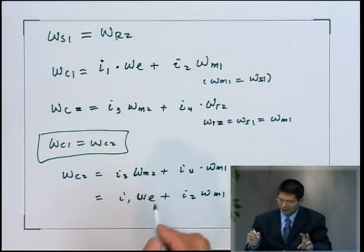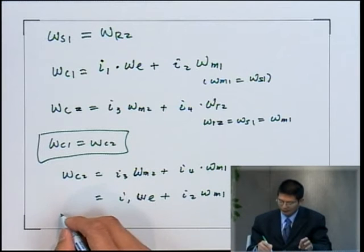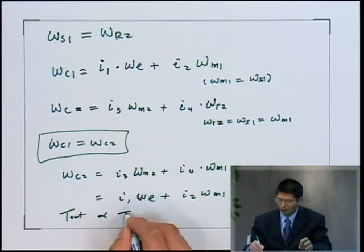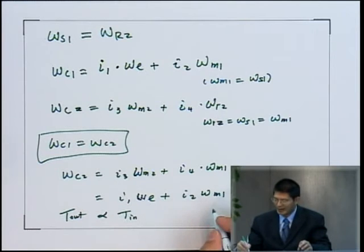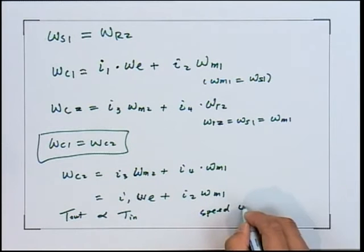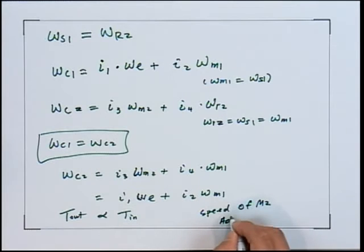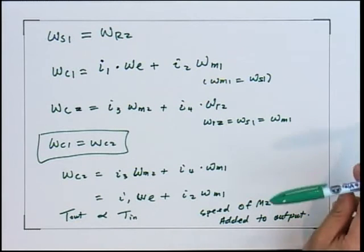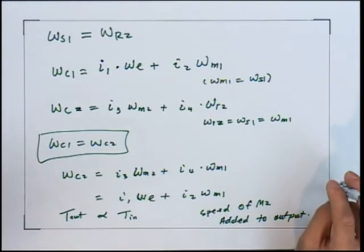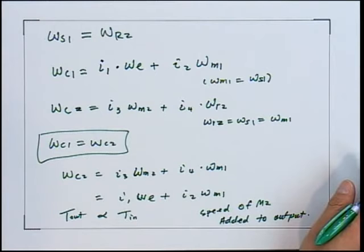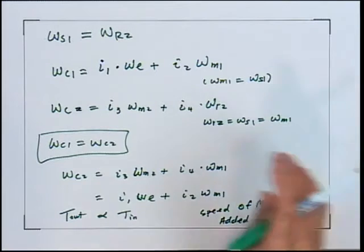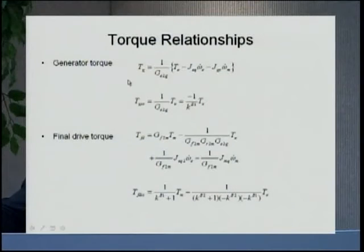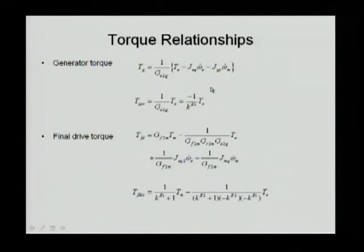With all these coefficients, you can see that the speed of M2 is added to the output shaft — this is called speed coupling, which is good for high-speed operation, and is called the high range. This is the set of dynamic equations derived from the system dynamics. Neglecting all dynamic terms gives the steady-state relationships.